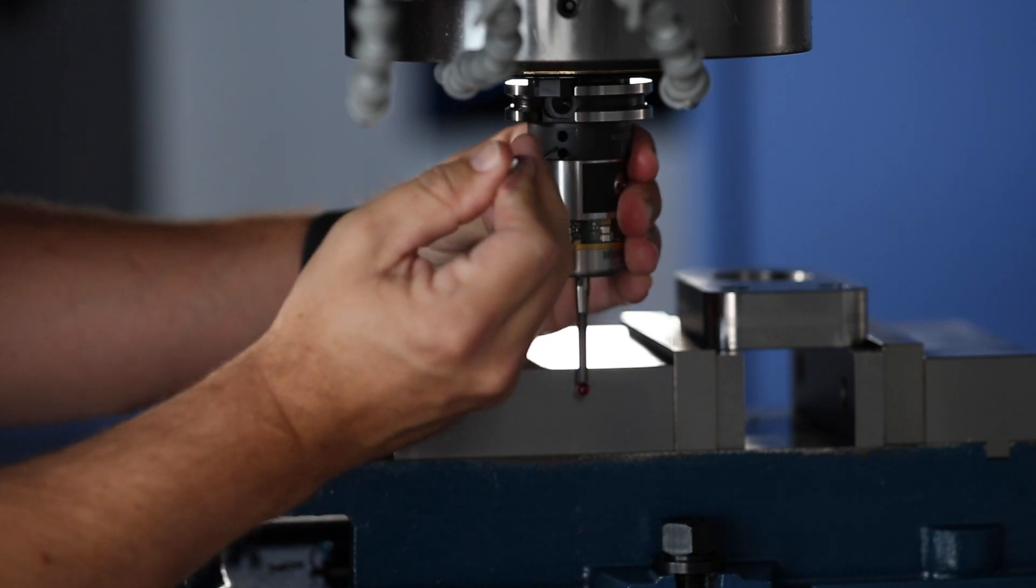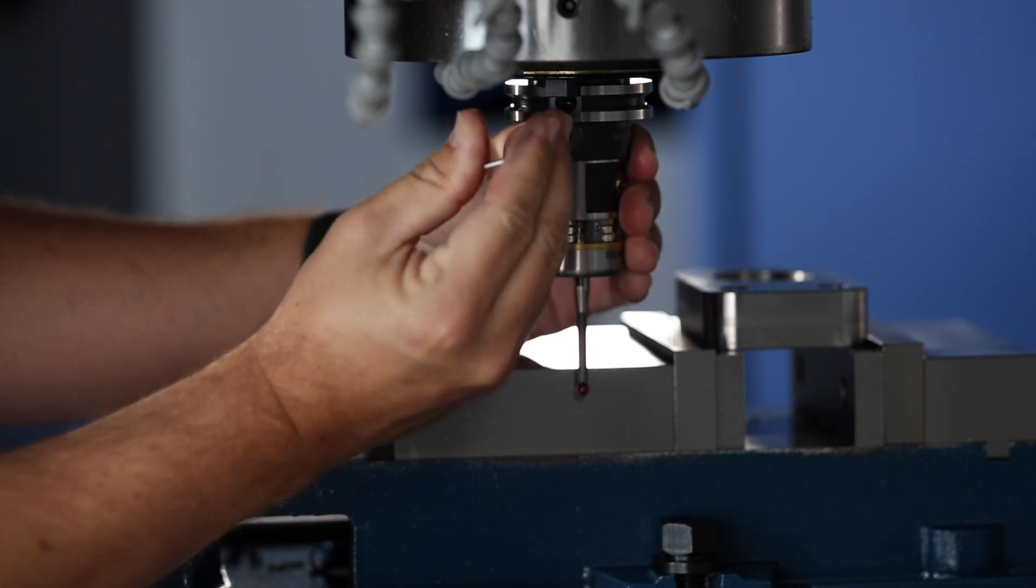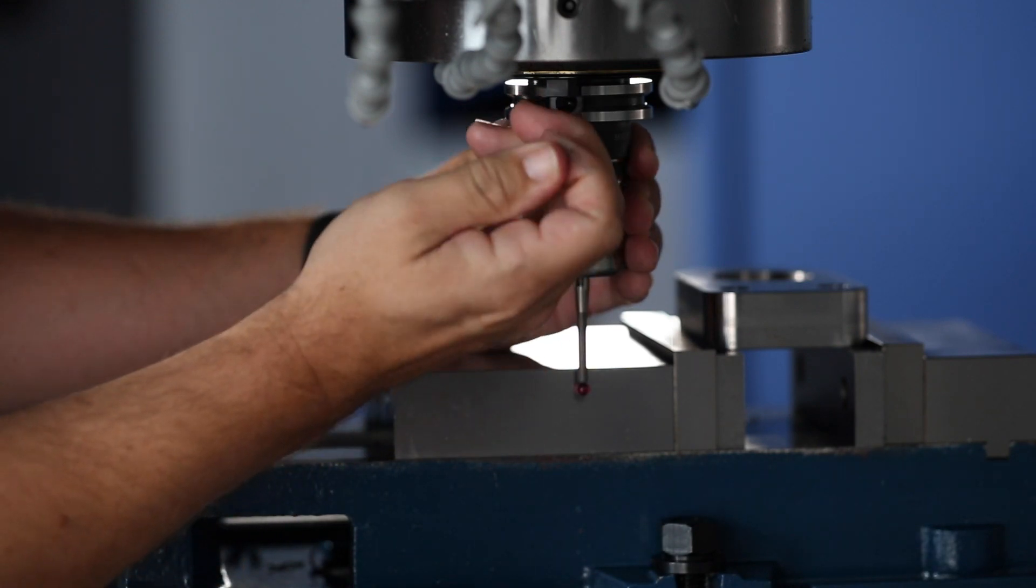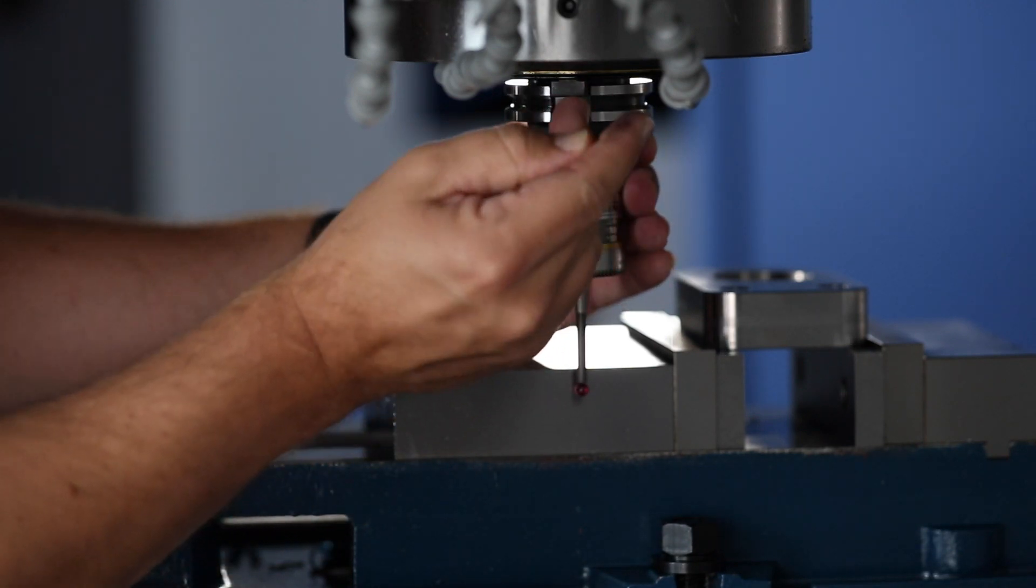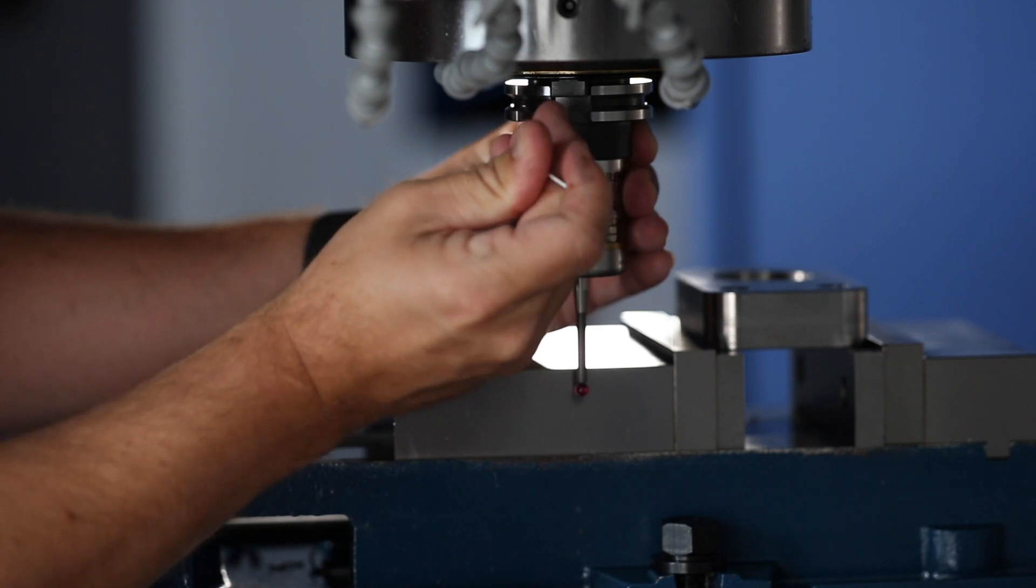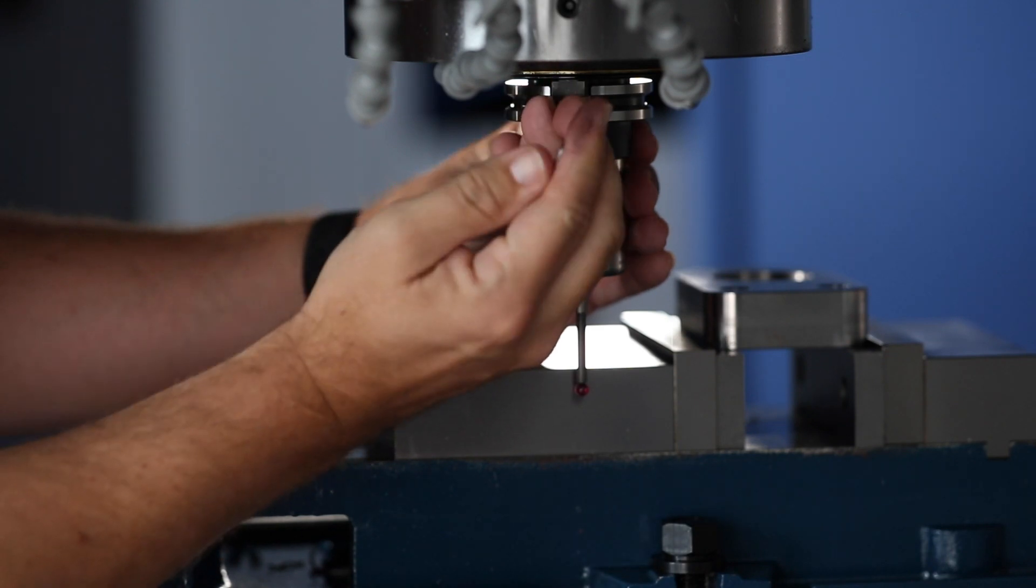On the Renishaw probe, it has fine adjustment screws and set screws for trimming the ball in and locking it into place. You'll need your 2mm Allen wrench to use these. We'll adjust the ball as close to center as we can with the fine adjustment screws on the probe.